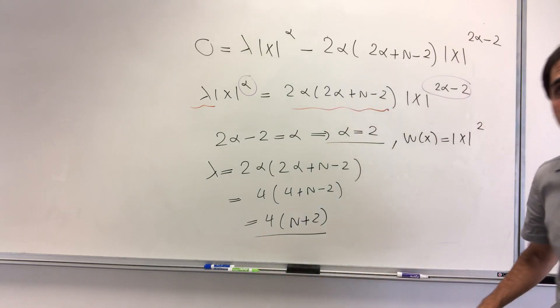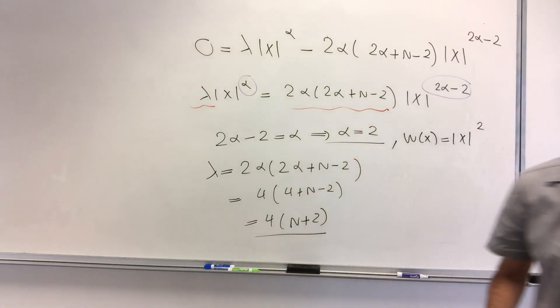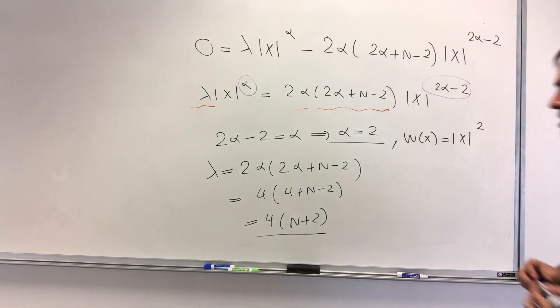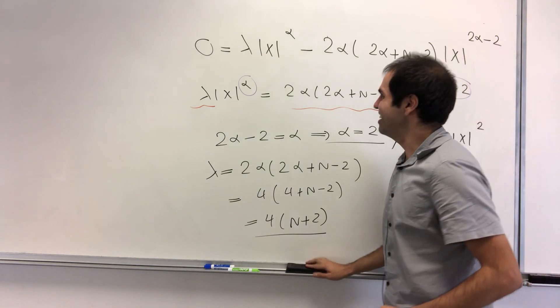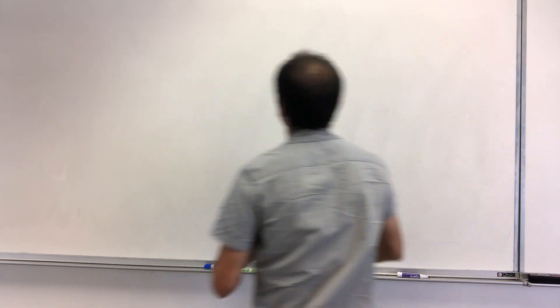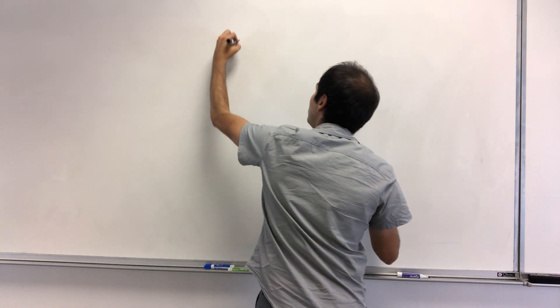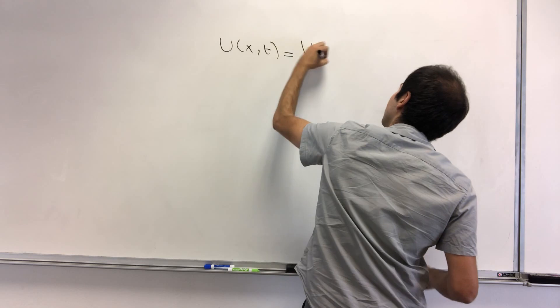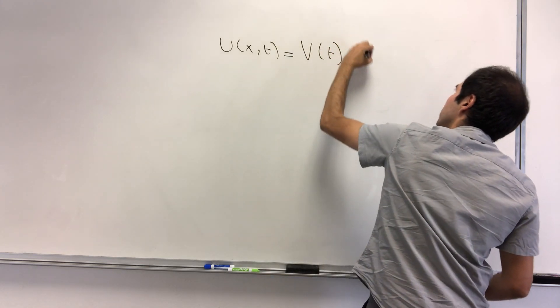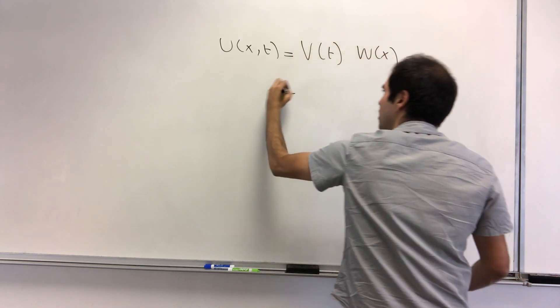Which is great because now we actually found our solution, namely, I can't believe I'm saying namely, it's a curse. Again, what did we get? So u x t, it's v of t times w of x.